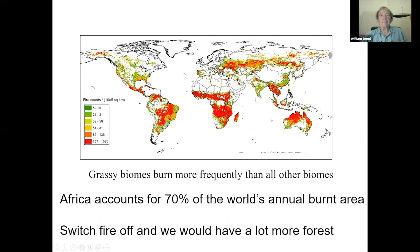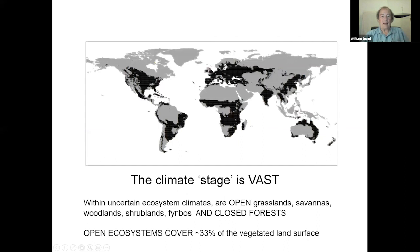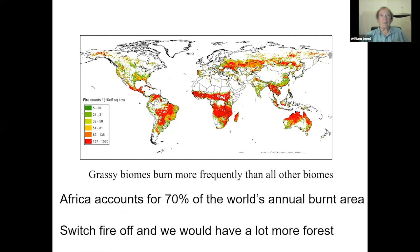Satellite imagery of fire helped us enormously in recognizing how potent these consumers can be. Look at Africa in these uncertain climates — the redder the color, the more frequent the fires. Africa accounts for something like 70 percent of the world's annual burnt area. If you could switch fire off, we would have a lot more forest.